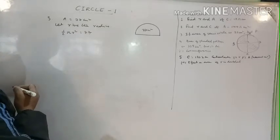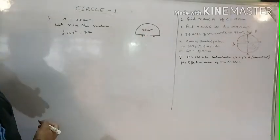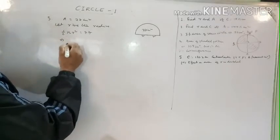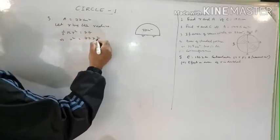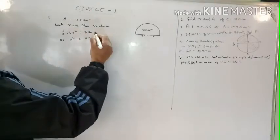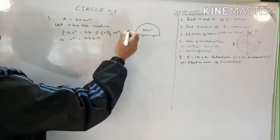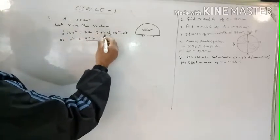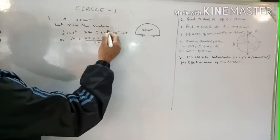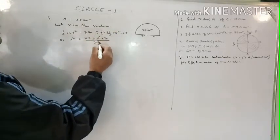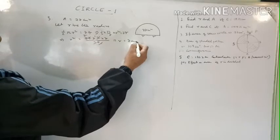Let r be the radius. Area of semicircle equals (1/2)πr² equals 77. Substituting π as 22/7: (1/2)(22/7)r² equals 77. Cross multiplying: r² equals 77 times 2 times 7 divided by 22, which gives r² equals 49, so r equals 7 centimeters.